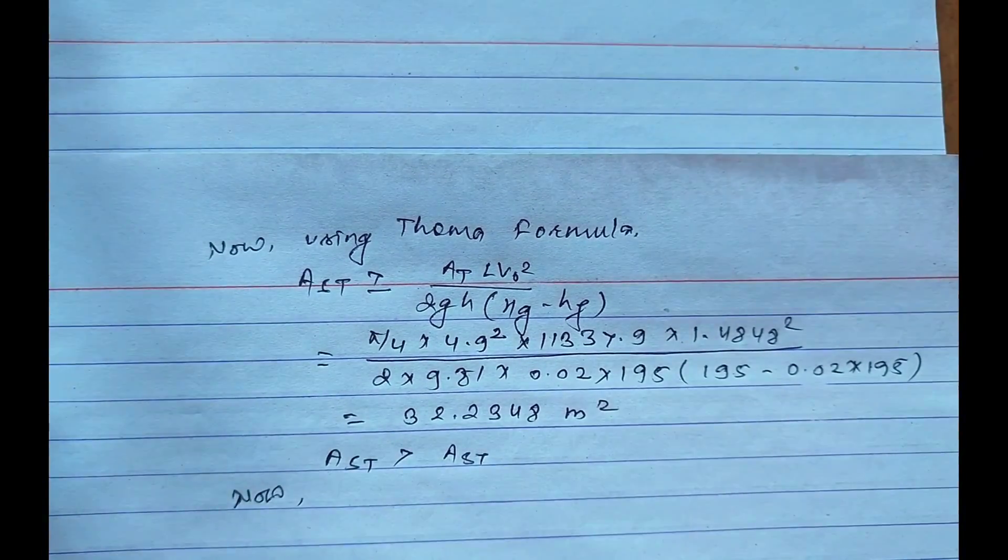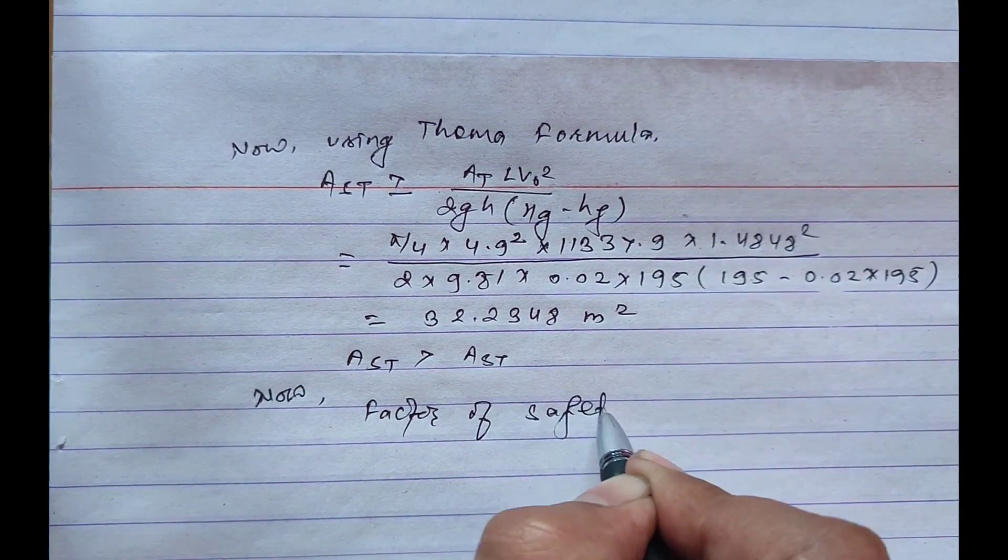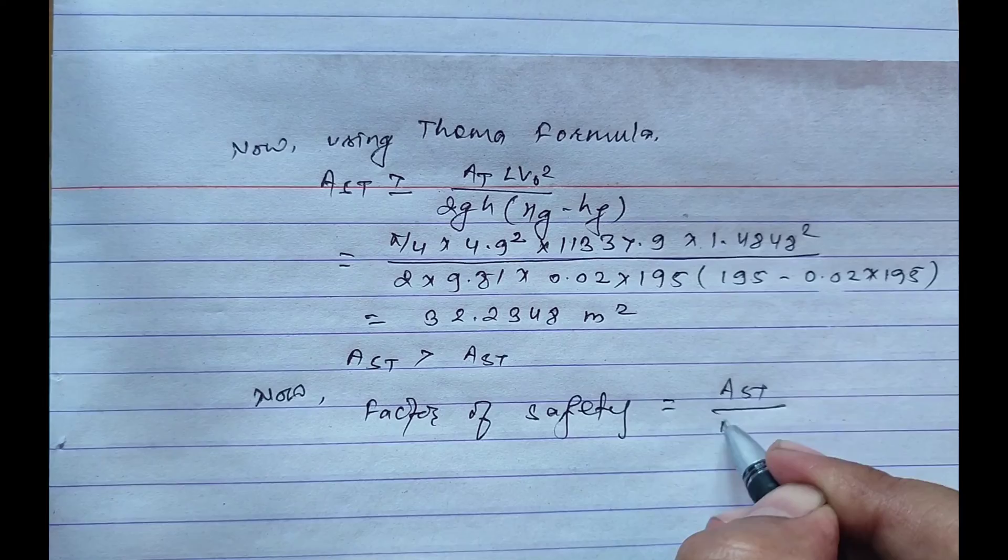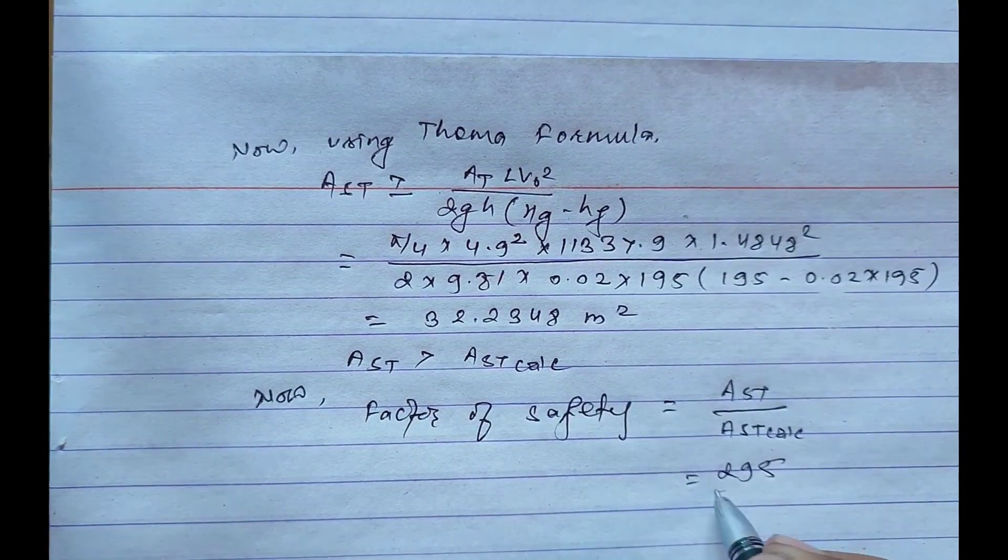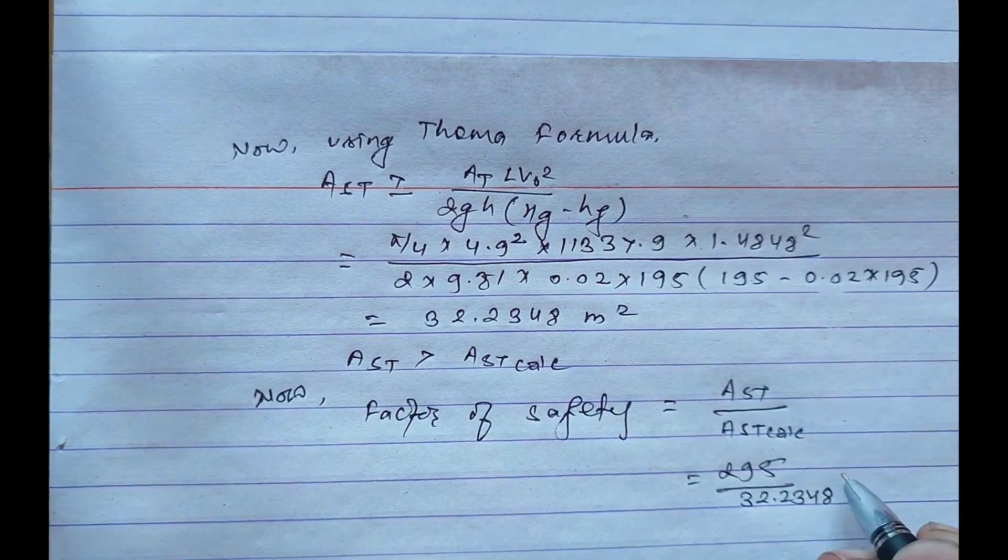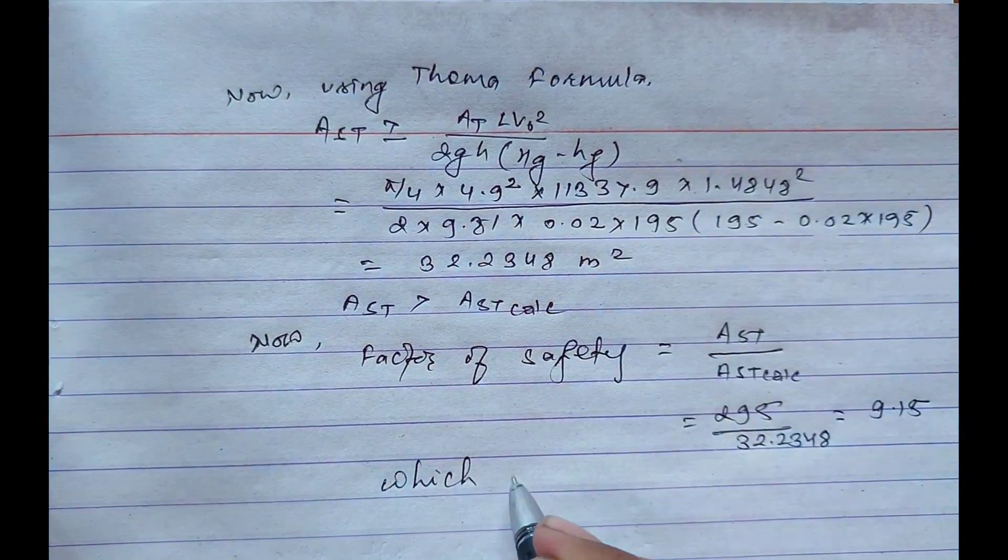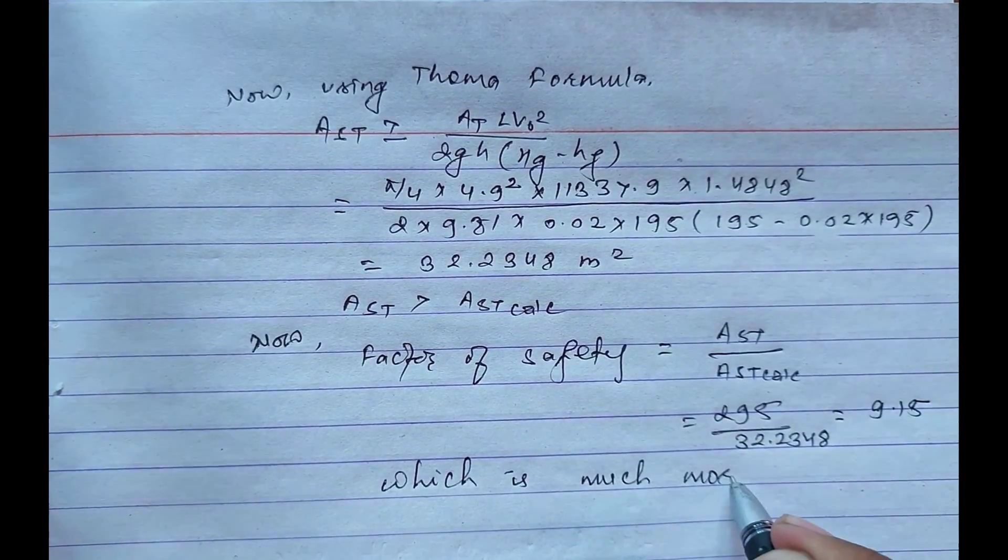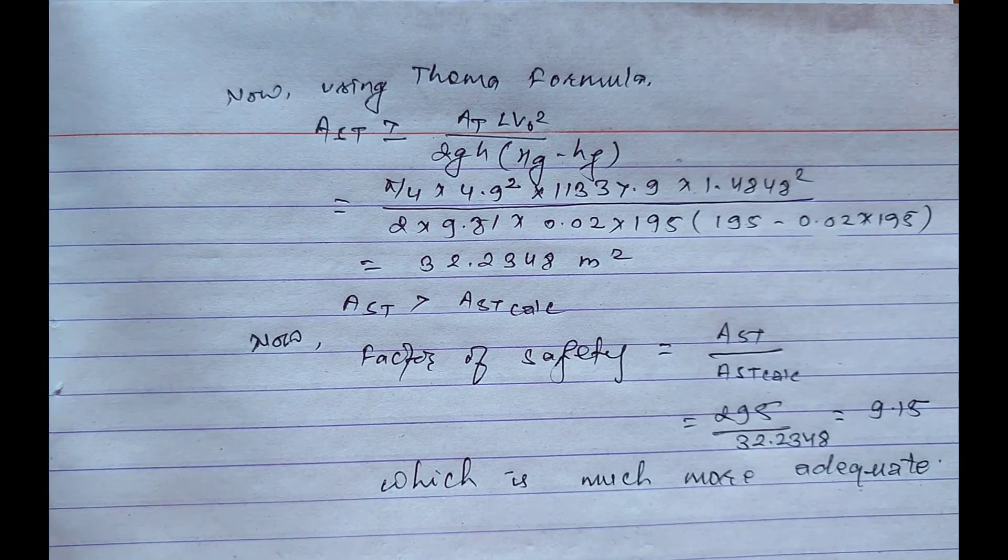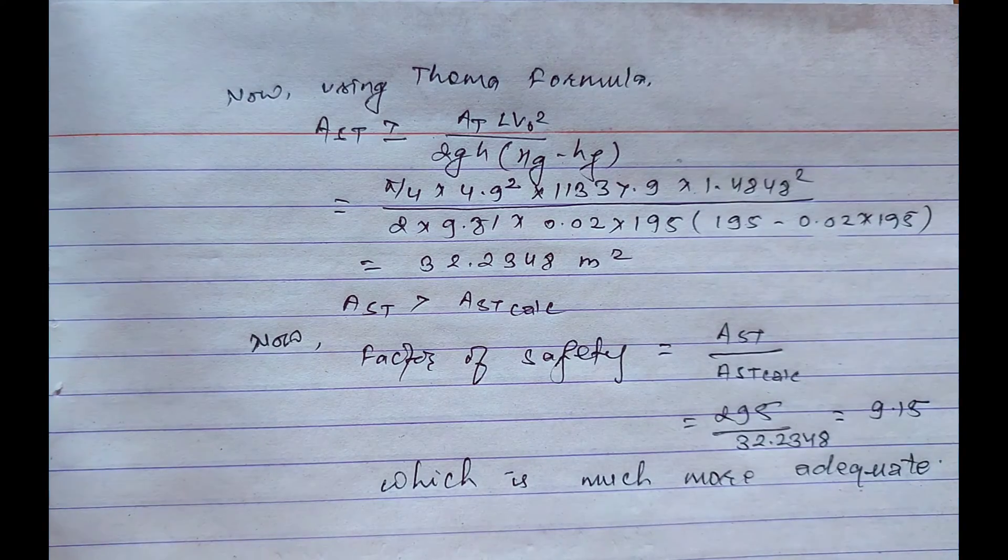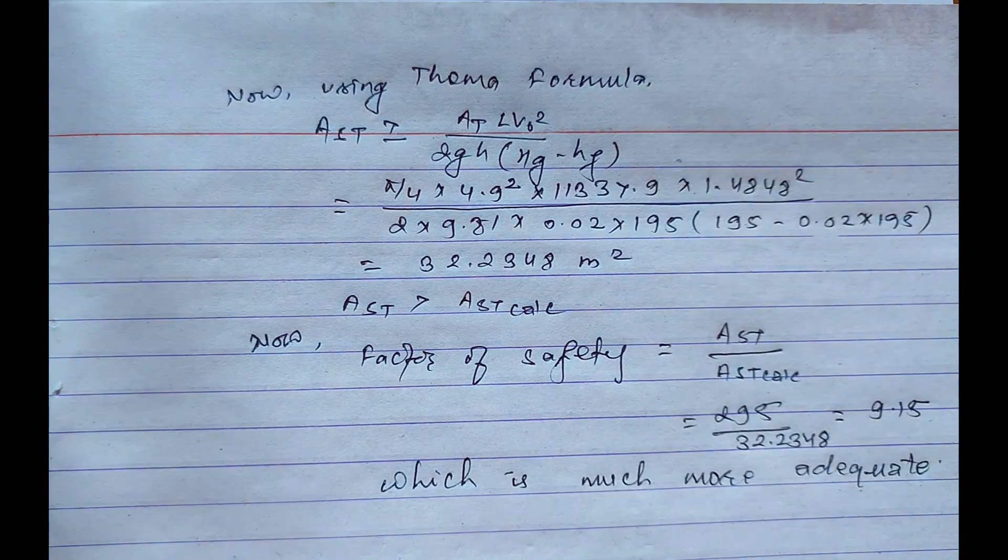Now factor of safety equals A_st divided by A_st calculated, that is 295 divided by 32.2348 equals 9.15, which is much more adequate. So on calculating the factor of safety, the factor of safety is much more adequate with the given data.